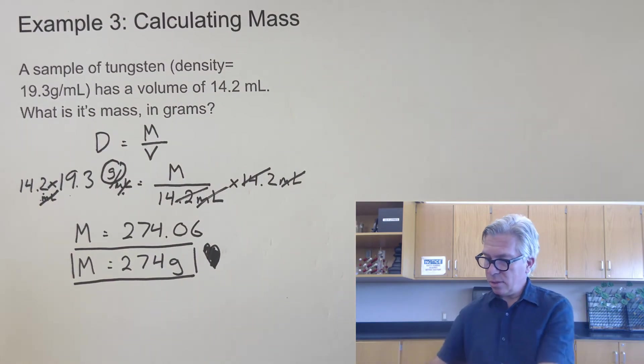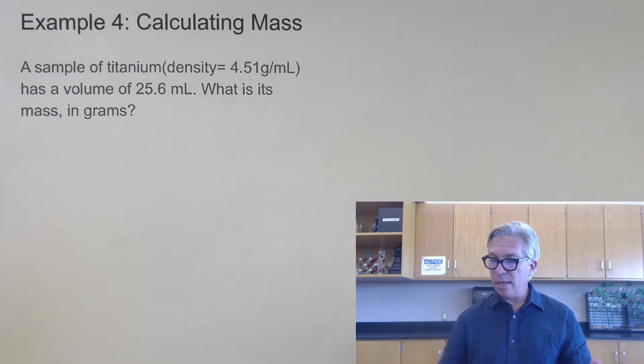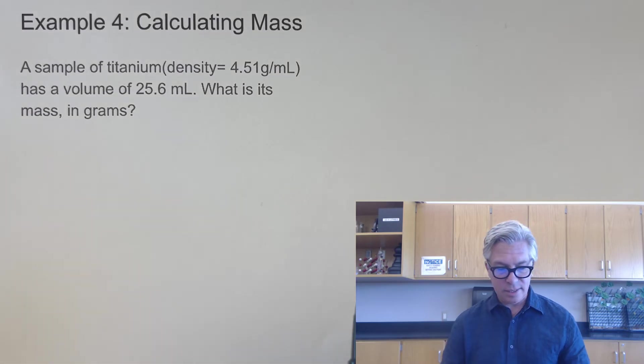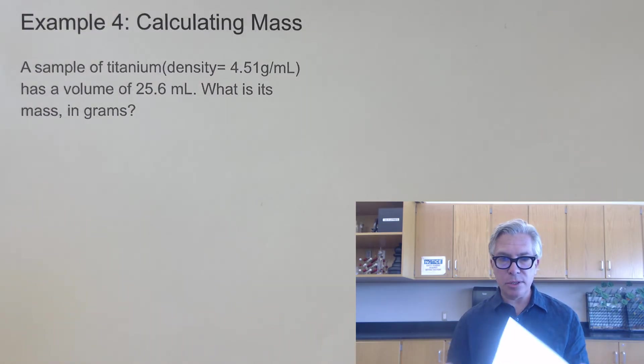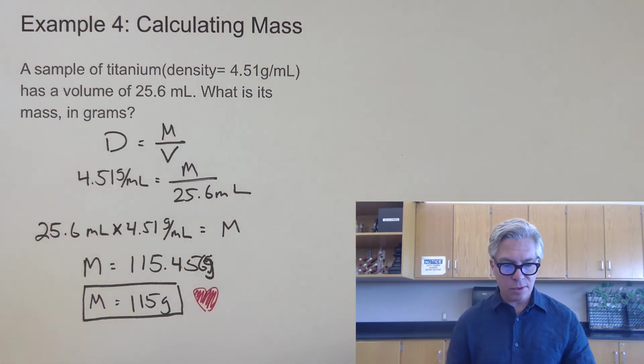All right, now it is your turn. Second pause the video moment. All right, and the second pause the video moment is example four, calculating mass just like we just did. A sample of titanium with a density of 4.51, it's much less dense than tungsten, has a volume of 25.6. What is its mass in grams? Take a moment, pause the video, and see if you can solve this one. Okay, and if you were able to do that, and you got an answer of 115 grams, then congratulations, you're on a roll. And that is the mass of the titanium that we have in our sample. So there you go.